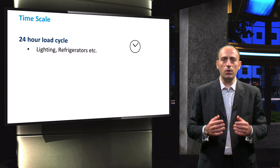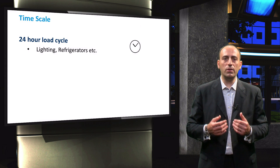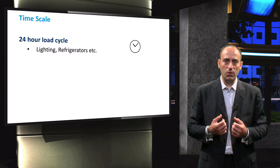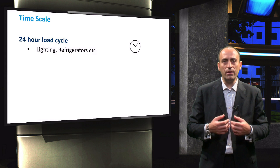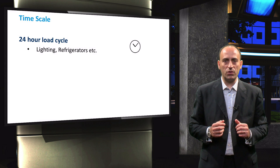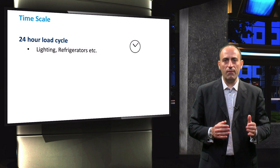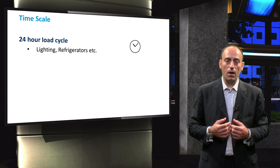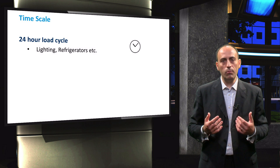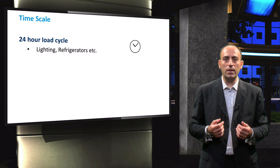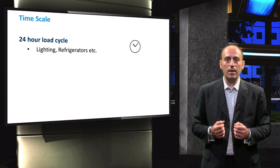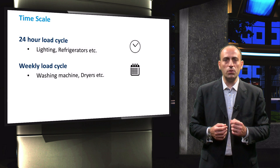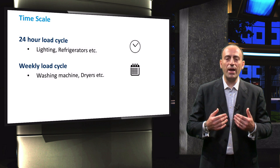In PV system design, load profile analysis will often depend on the available resources. Analysing a load profile can be performed with increasing complexity and accuracy. The simplest model is to determine the load profile of a 24-hour load cycle and assume the load profile is the same every day. However, such analysis might not include all loads, as it might not take into account loads that are not operated every day — typical examples being the washing machine and the dryer. When such loads are present, a weekly load analysis will give a more accurate result.